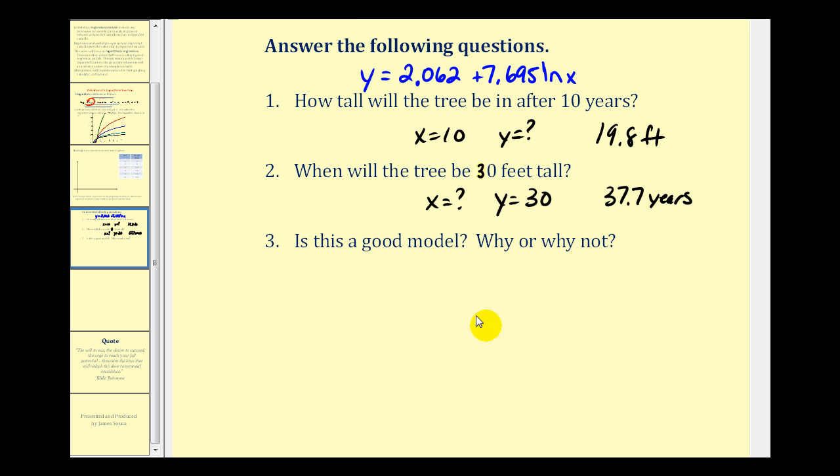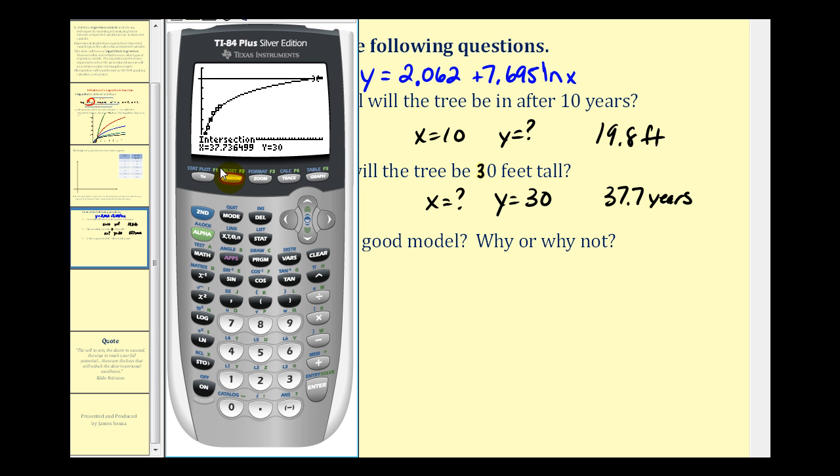I'm going to adjust the window back to what we had before. I just want to point out that looking at our model, notice that at this x value here the height would be zero. And then when x is less than this value, the y values would be negative. I want to make a point that the model would not be appropriate to the left of this point here because we know the height would never be negative. In fact, we probably would predict the height to be zero when x equals zero. So this model does have some limitations, especially when x is less than one year.